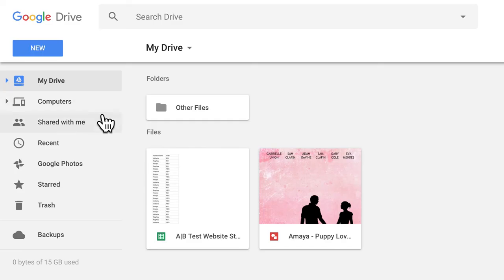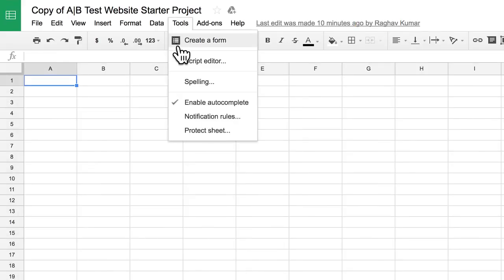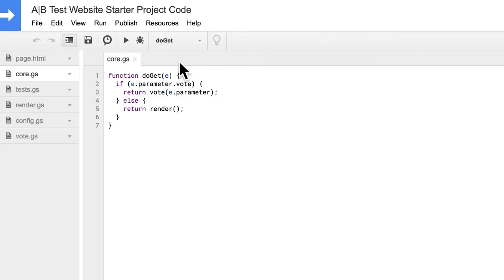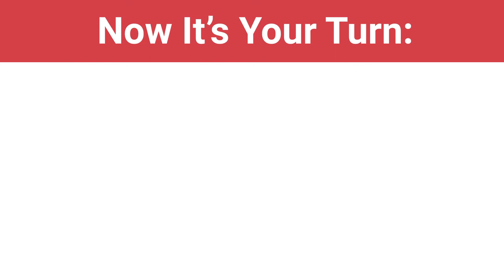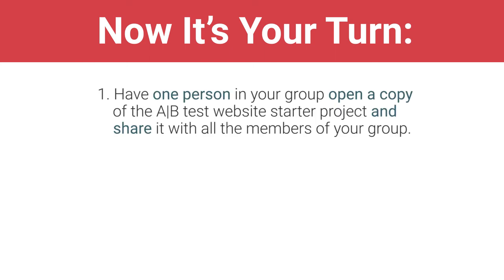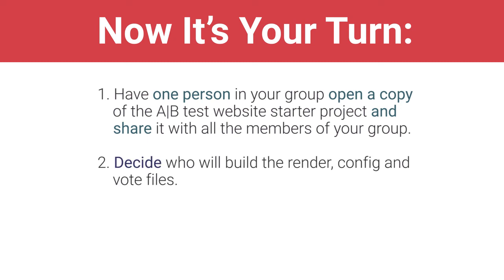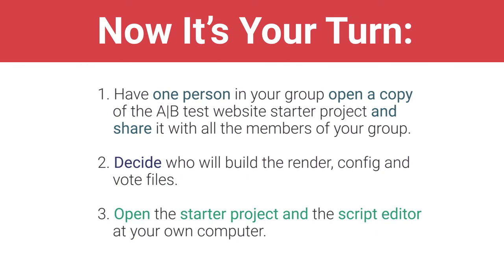When you've decided who will write each part of the code — render, config, and vote — open the starter project from your shared with me file. From the spreadsheet, open the script editor. Then move on to the video for your part of the code. Have one person in your group open a copy of the A-B test website starter project and share it with all the members of your group. Decide who will build the render, config, and vote files. Open the starter project and the script editor at your own computer, then move on to watch the video for your part of the code.